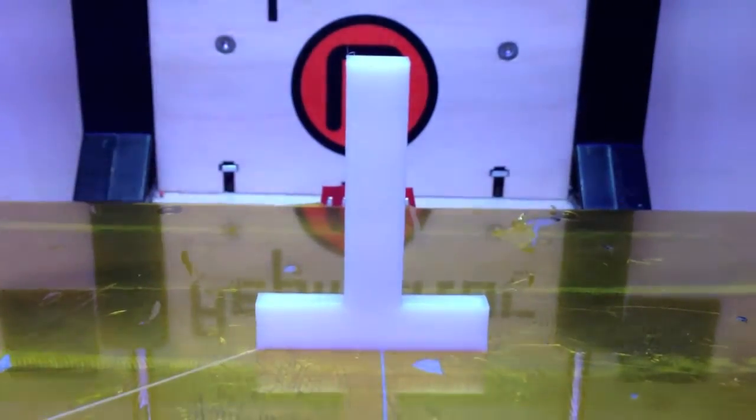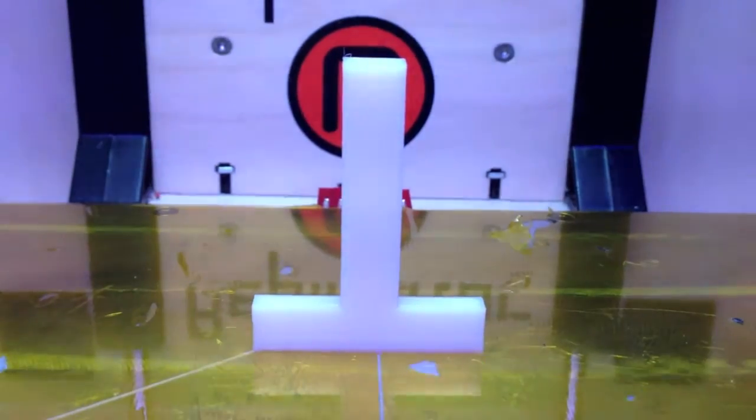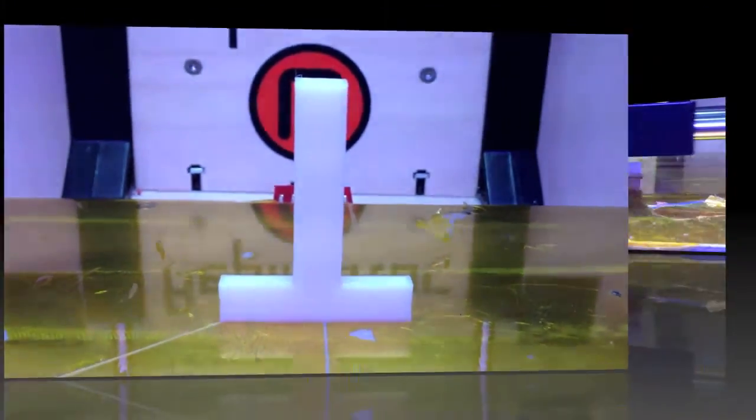And here we have our finished letter T. It's upside down, but no support was needed to hold it up. Next, we'll build it right side up and that one will require support.